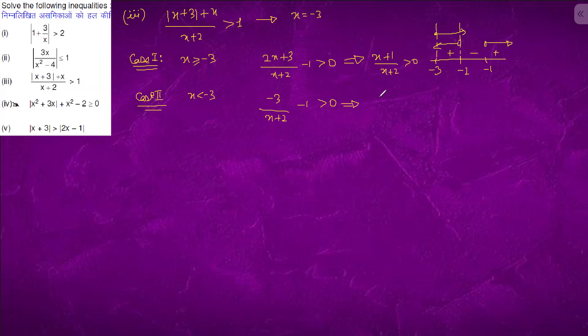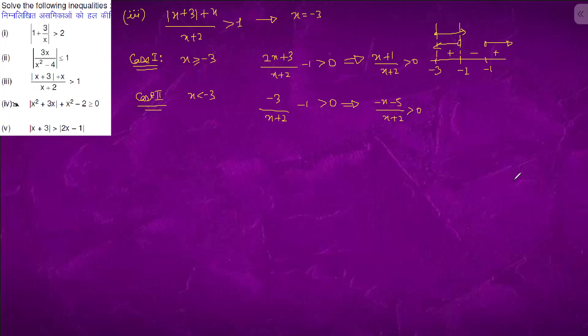From here we have (-x-5)/(x+2) > 0, which gives (x+5)/(x+2) < 0. Using the sign chart with critical points -5 and -2, we get x between -5 and -2.